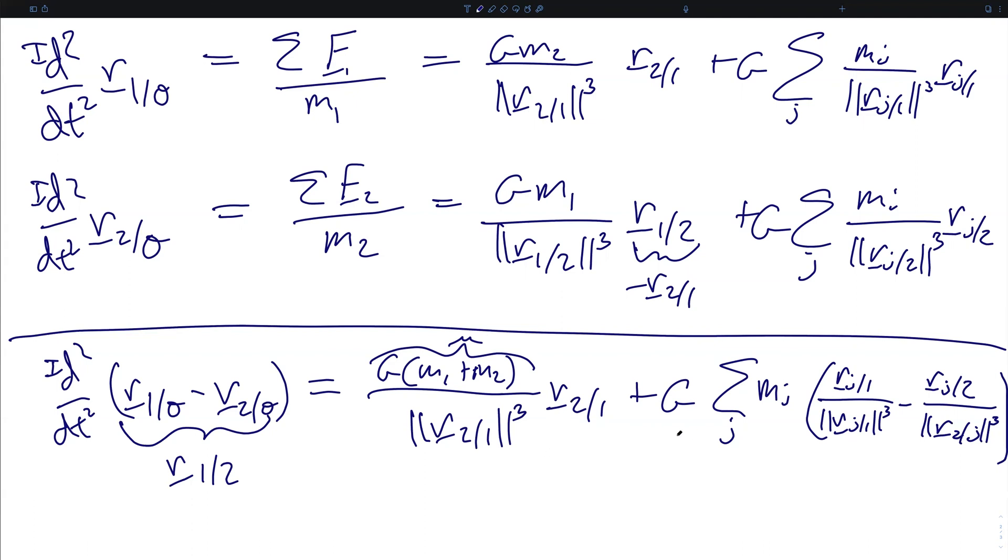Plus everything else, which comes out as the gravitational constant times the sum over j of the jth perturbing mass times the quantity Rj rel 1 over Rj rel 1 norm cubed minus Rj rel 2 over the quantity R2 rel j norm cubed. And here I flipped the order of these indices just for notational convenience, because this is a norm, it does not matter. Norm Rj rel 2 is exactly equivalent to norm R2 rel j.